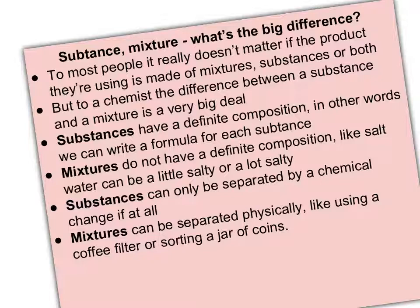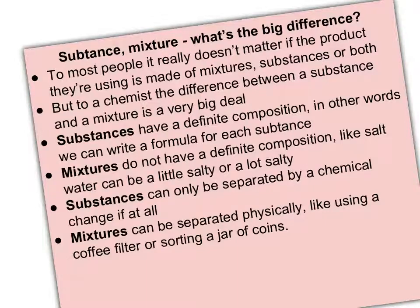Mixtures don't have a definite composition, like salt water — it could be a little salty or a lot salty. In fact, even the term salt has a lot of different definitions. A substance, because it has a definite composition, is chemically combined and can only be separated by a chemical change. Mixtures, though, you can separate physically, like using a coffee filter to keep the grounds out, or sorting a jar of coins into pennies, dimes, nickels, etc.